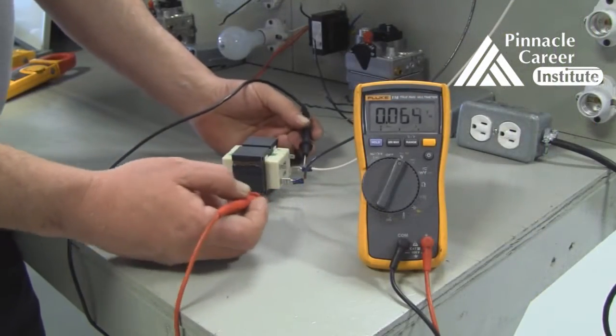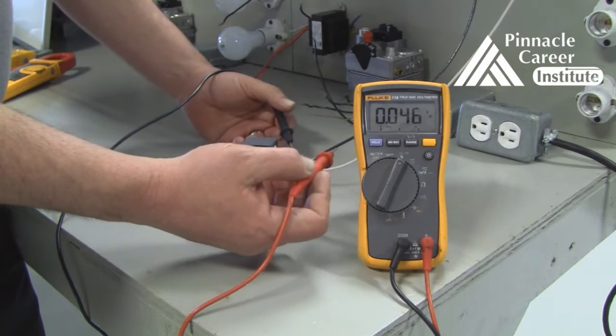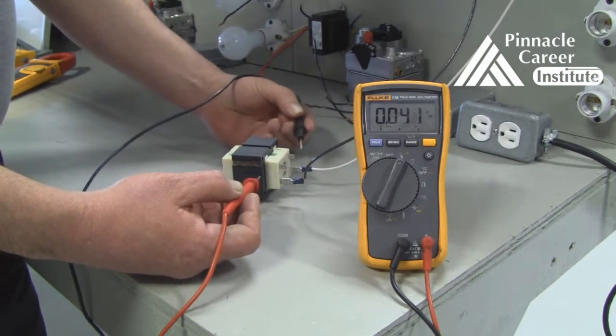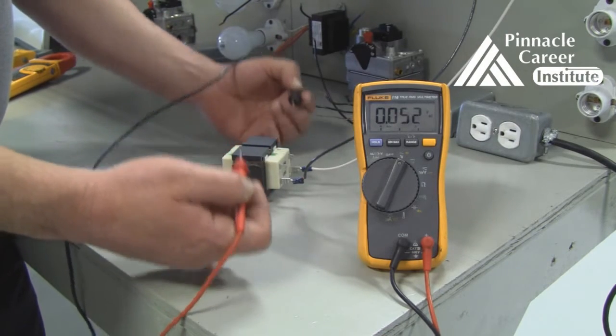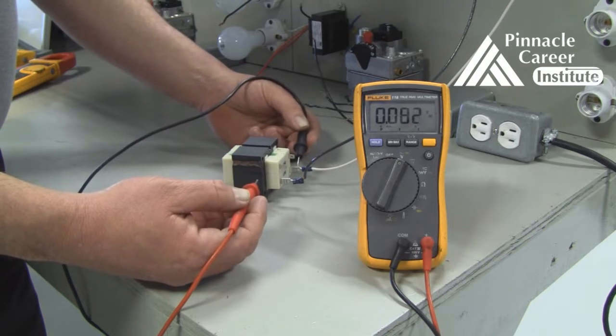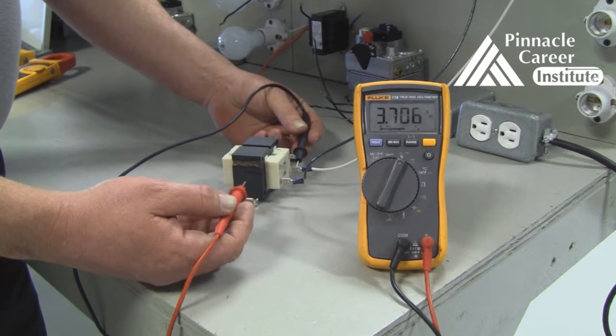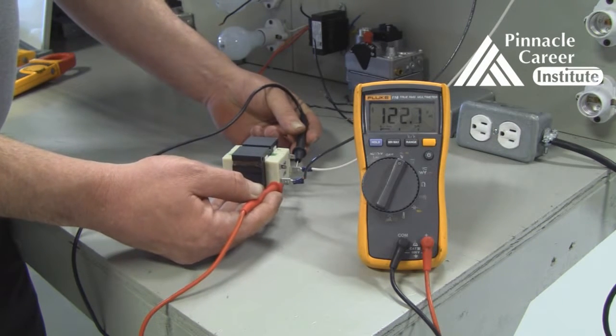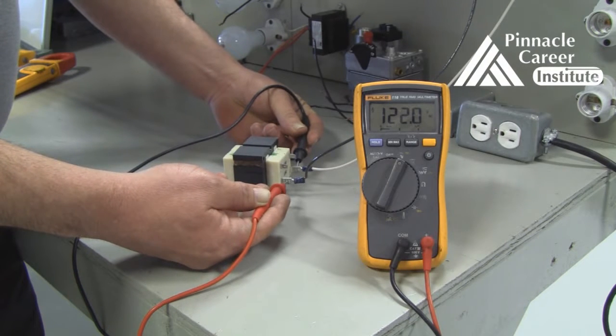So now we're going to test voltage on a component. We have a normal transformer here. You can see the black or 120 volt wire coming in and the neutral wire coming in. When testing voltage on a component, it is always very important to have a neutral or that white wire. So I'm going to place one meter lead on the neutral and one on the 120 volt hot. And you can see here I have 122 volts.